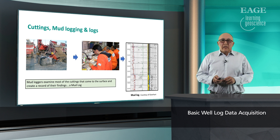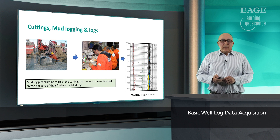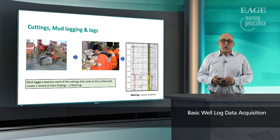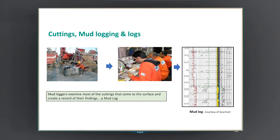Cuttings. You can see from these pictures that the engineers are looking at these cuttings when they get to the surface. One is outside and does a first assessment of the cuttings, and the second engineer is in a cabin looking at the various fragments of rock to find out what minerals and fossils they contain. Then they do a mud log — shown on the right-hand side — with lithology, fossils, facies, and all the geological information that petrophysicists and geologists will find very useful.